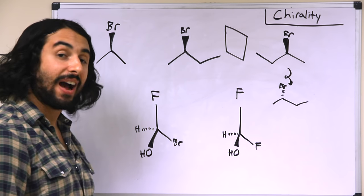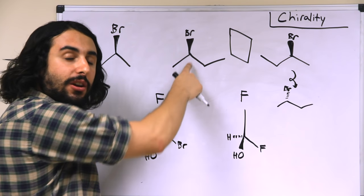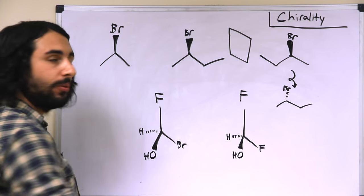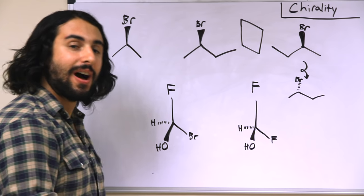So therefore, this molecule is chiral. It has a chiral center, or a center of chirality, or a stereogenic center, all terms that mean the same thing. And therefore, it does have an enantiomer.